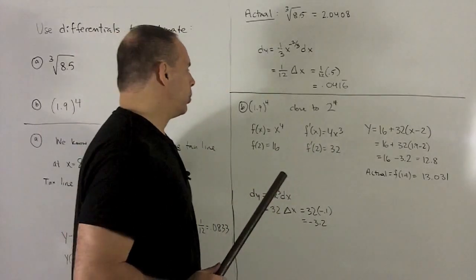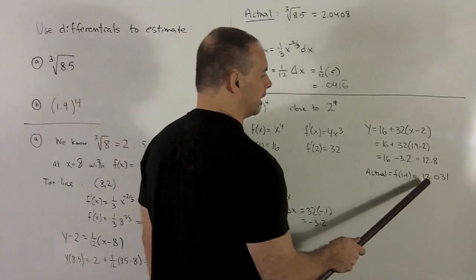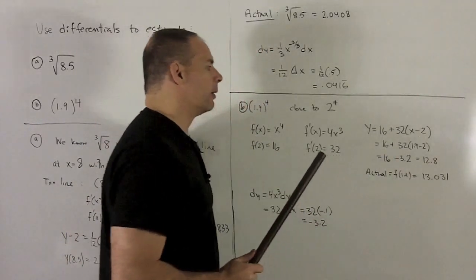We go and put 1.9 to the fourth power into our calculator, and we get 13.031, so this isn't too bad. We're off by about 0.2.